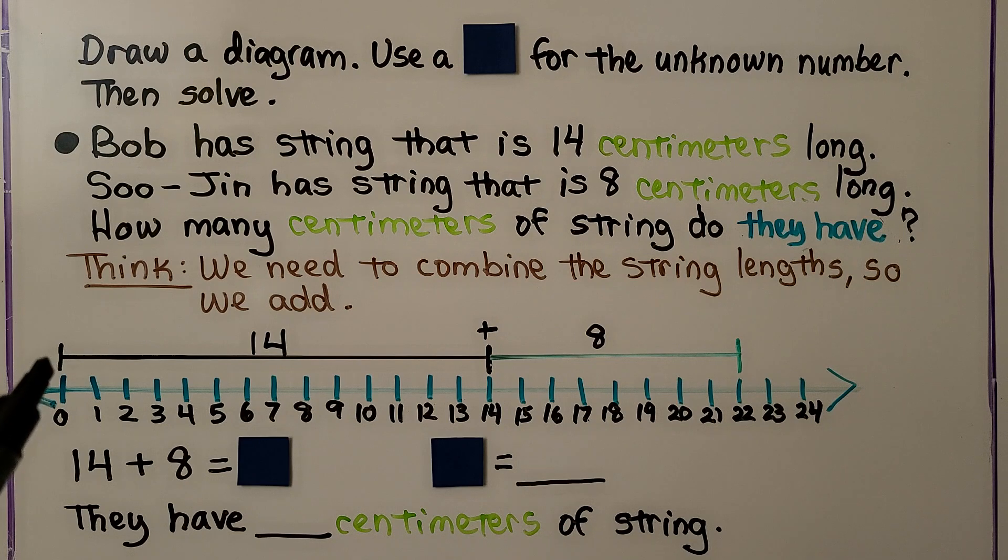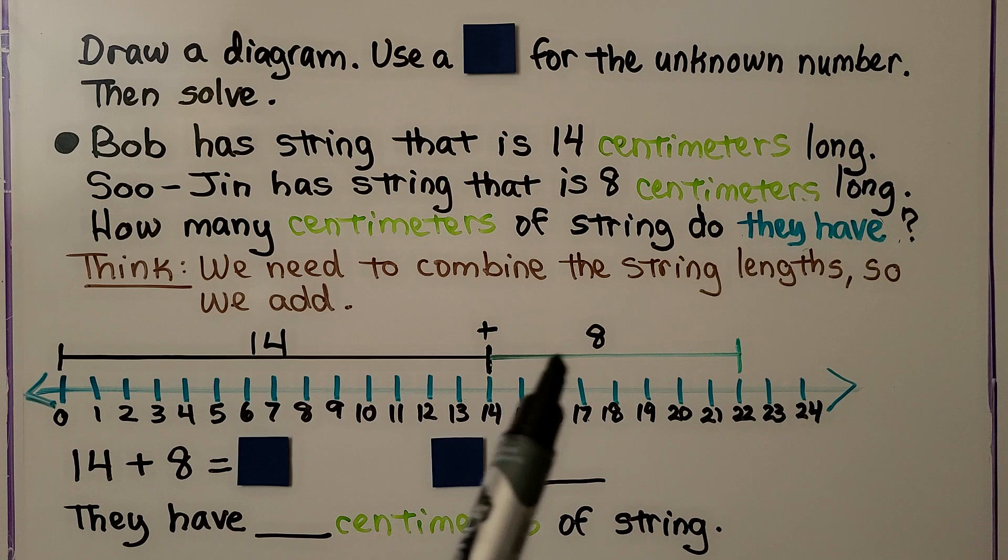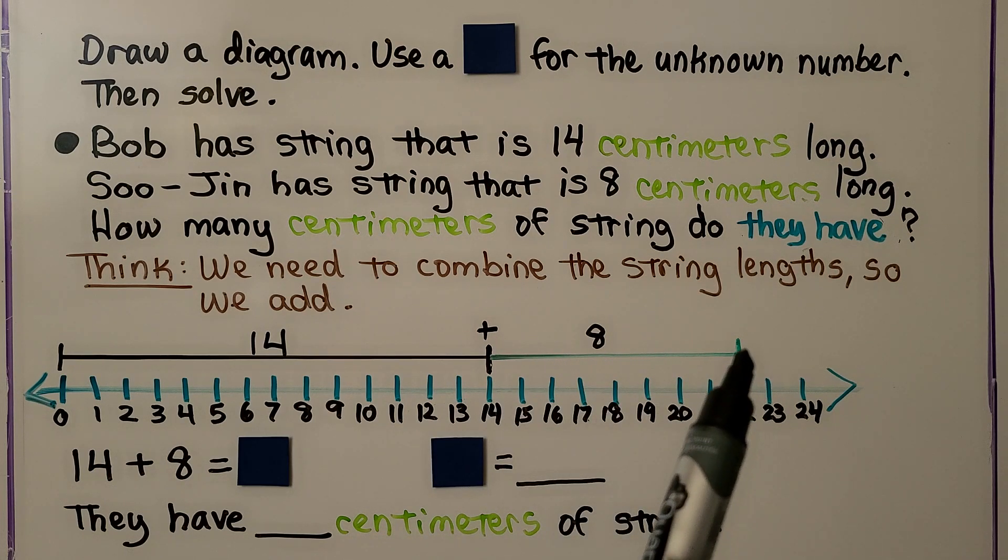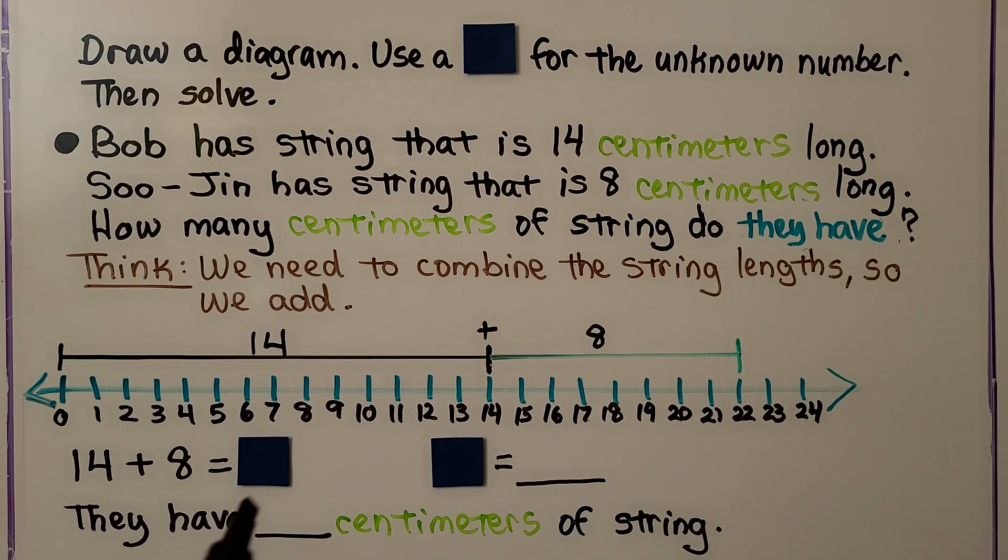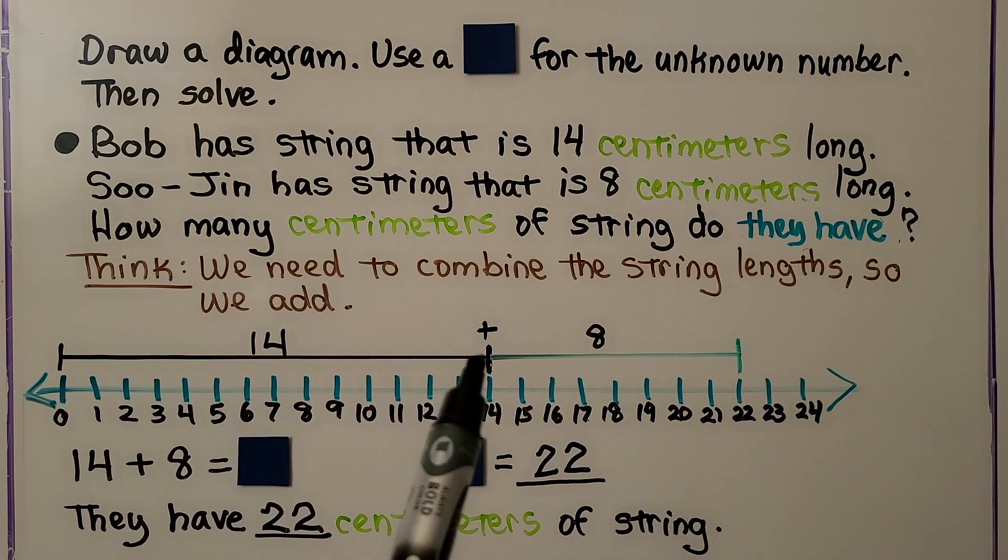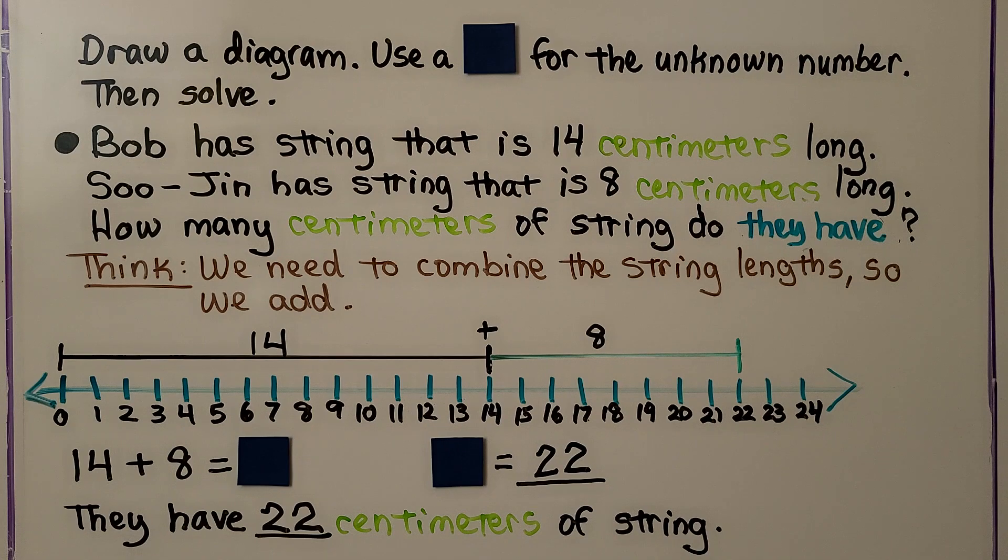On our number line, we have Bob's 14 centimeters, and we add 8 more for Sujin's, and we can see that it's 22. So 14 plus 8 is equal to the square. This square is equal to 22, which tells us they have 22 centimeters of string. We were adding, so we went to 14 for Bob's length, and made the line longer to add 8 more centimeters for Sujin's length.